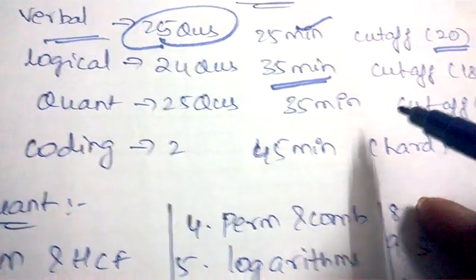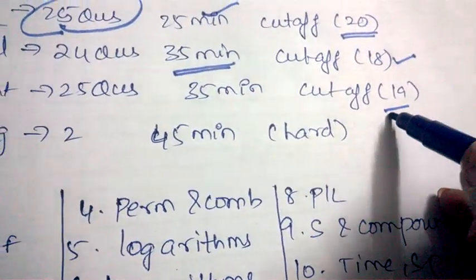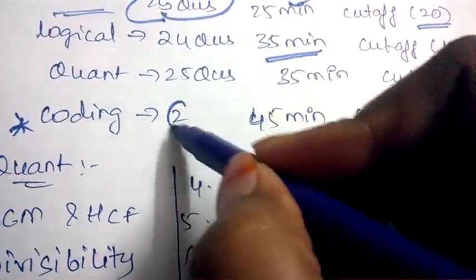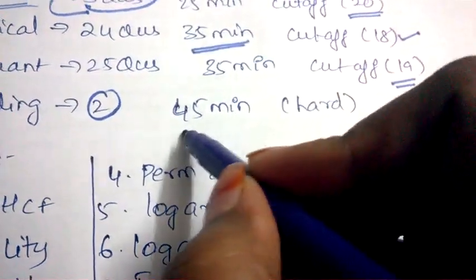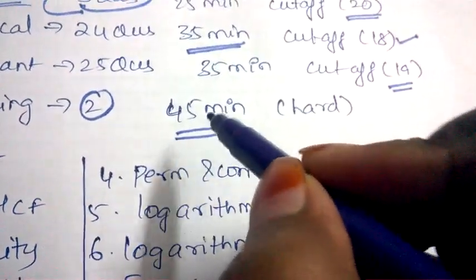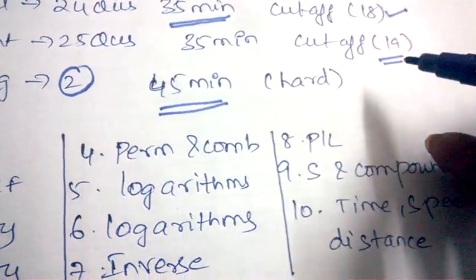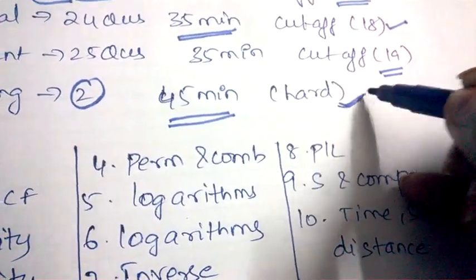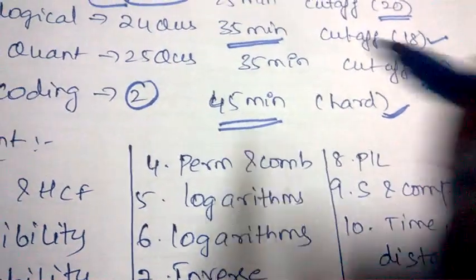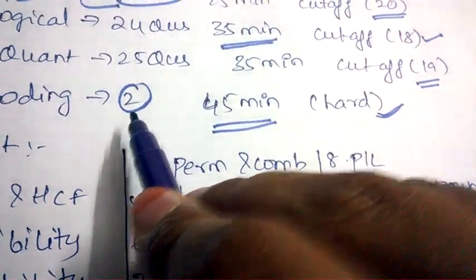And there will be an additional coding round in the written test where you'll be asked two questions and given 45 minutes. The complexity and the level of coding will be really hard, so you need to concentrate more on these two coding questions because it is hard to solve.